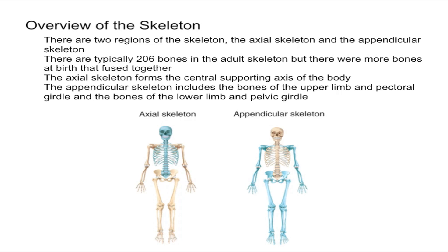The appendicular skeleton is everything else. It generally consists of 126 bones, including the bones of the upper and lower limbs and their connections to the axial skeleton. They are mainly made up of long bones as well as some other bones. The function of the appendicular bones helps with balance and stability, along with locomotion and manipulation of objects.